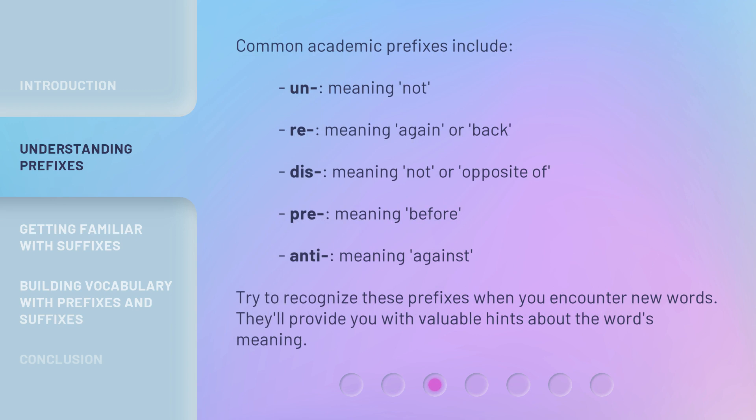Common academic prefixes include: 'un-' meaning 'not'; 're-' meaning 'again' or 'back'; 'dis-' meaning 'not' or 'opposite of'; 'pre-' meaning 'before'; 'anti-' meaning 'against.' Try to recognize these prefixes when you encounter new words — they'll provide you with valuable hints about the word's meaning.